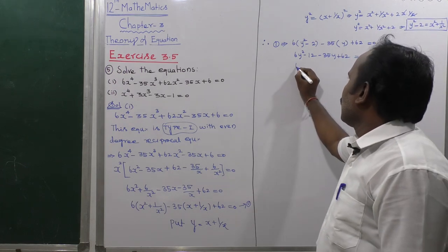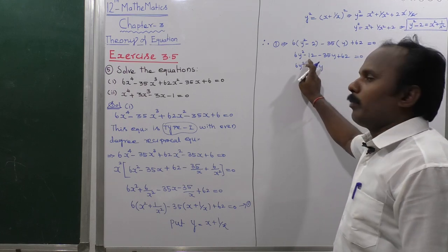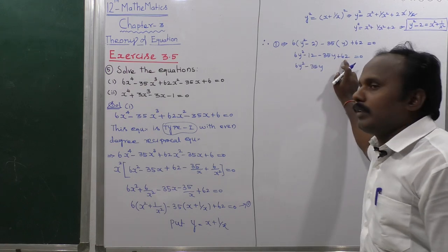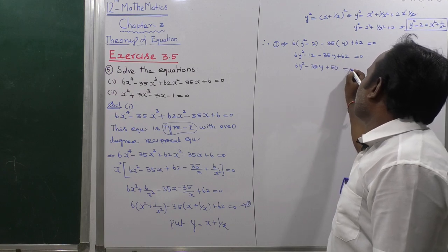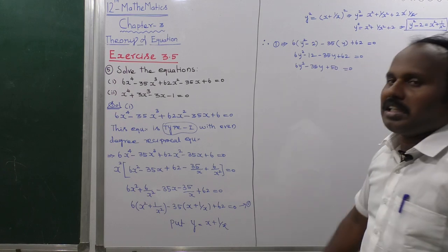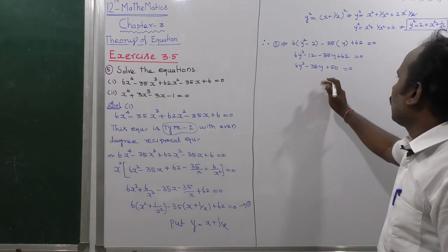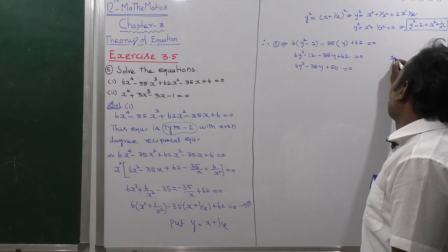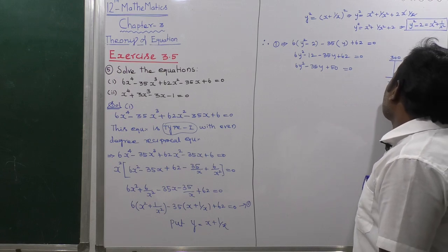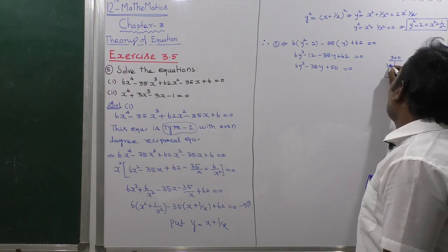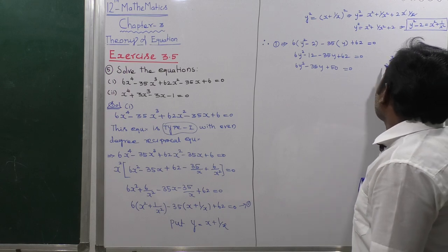Simplifying: 6y² minus 35y plus 50 equals 0. This is a quadratic equation. Using the normal factorization method — multiply the first and last terms: 6 times 50 equals 300. We need two numbers that multiply to 300 and add to minus 35. Those are minus 20 and minus 15. Wait, checking: 6 times (next step) 6y² minus 20y minus 15y plus 50 equals 0. Wait, recomputing: 6y² minus 35y plus 15 equals 0. Multiply: 6 × 15 = 90; factors of 90 adding to −35 — so 20 and 15, both minus.